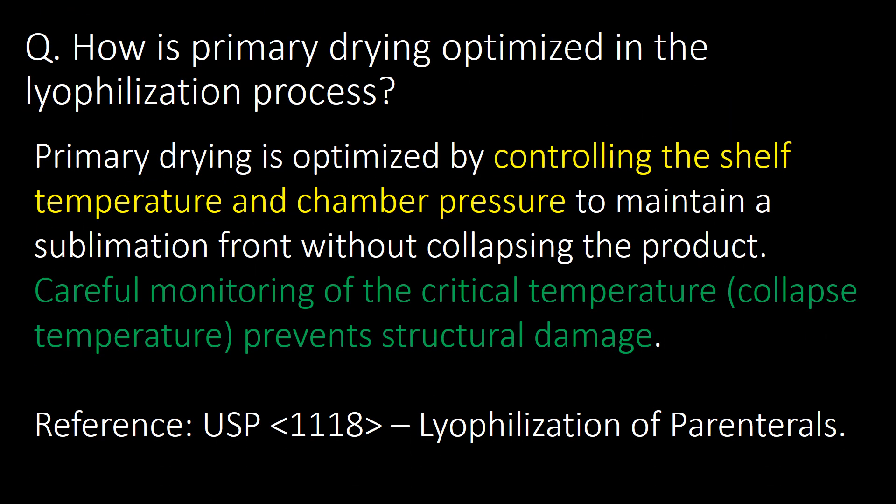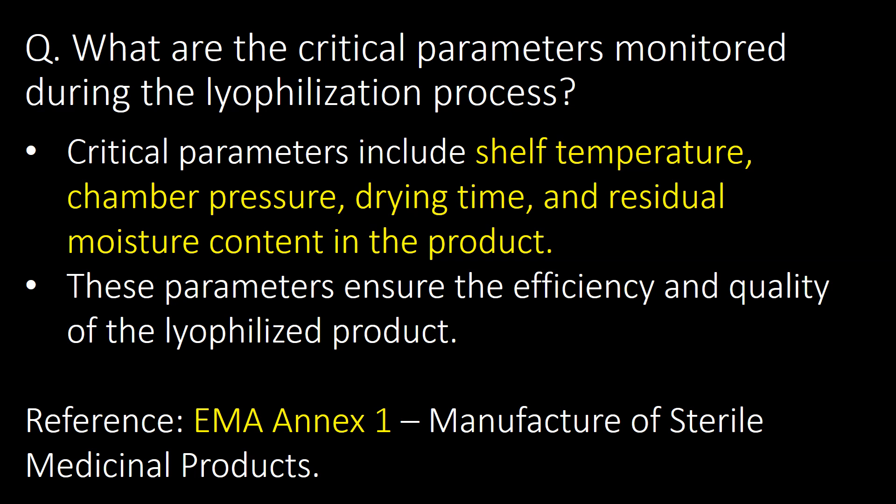How is primary drying optimized in the lyophilization process? Primary drying is optimized by controlling the shelf temperature and chamber pressure to maintain a sublimation front without collapsing the product. Careful monitoring of the critical temperature prevents structural damage. Reference: USP Chapter 1118.